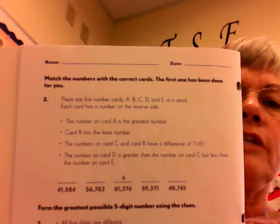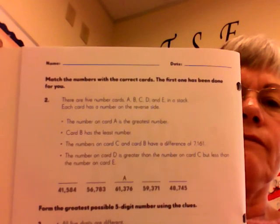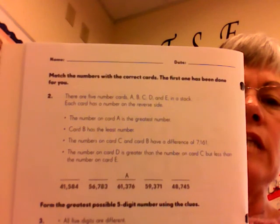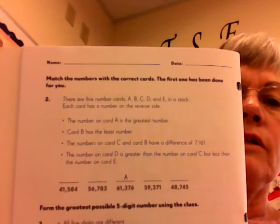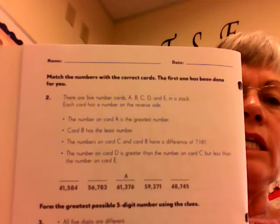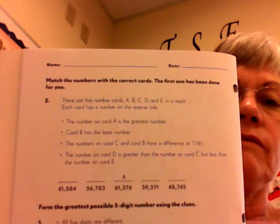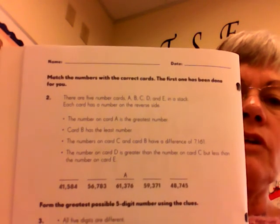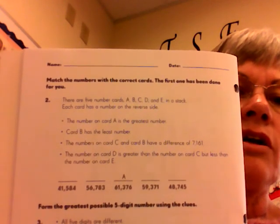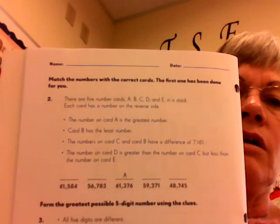I'll read them one more time. The number on card A is the greatest number. Card B has the least number. The number on card C and card B have a difference of 7,161. The number on card D is greater than the number on card C, but less than the number on card E.